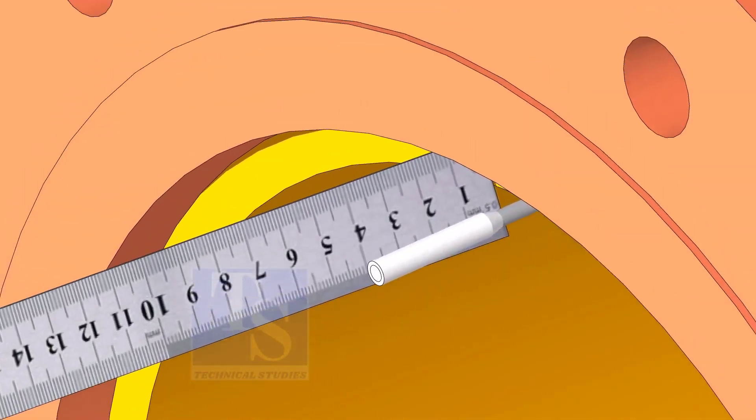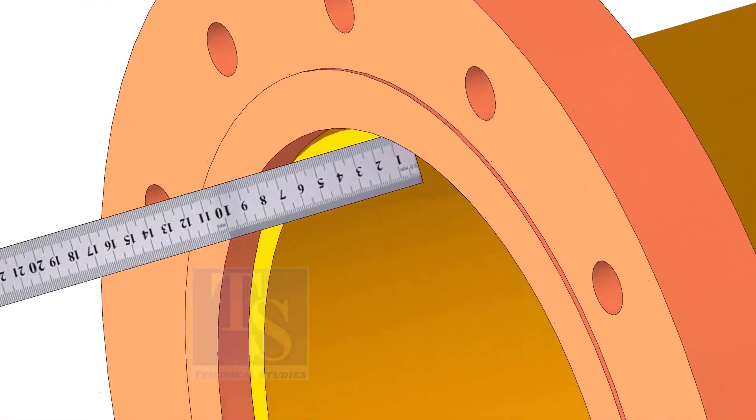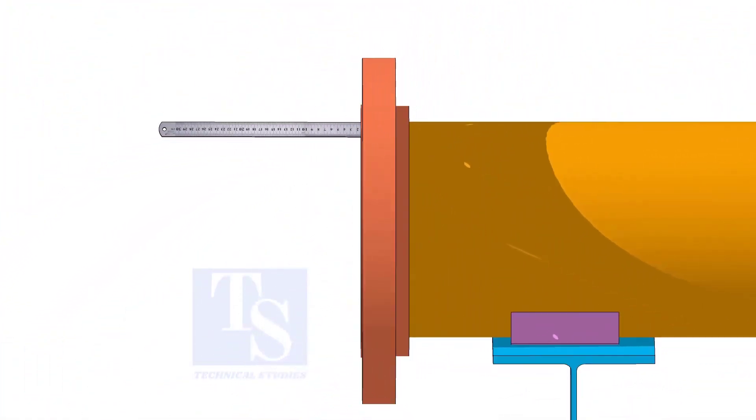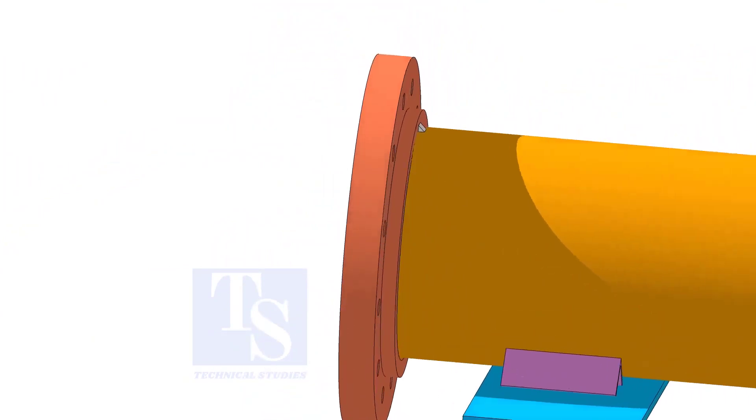Now, adjust the gap between the face of the flange and the pipe. TAC weld on the top side.